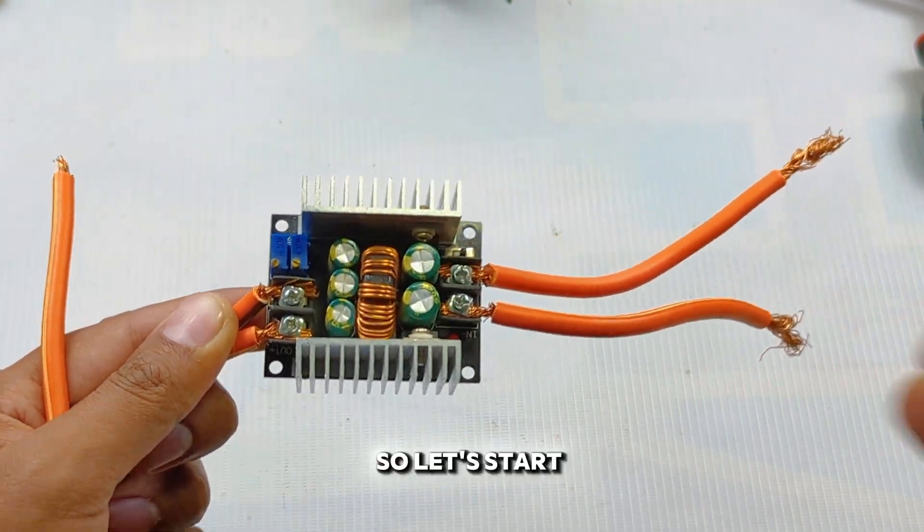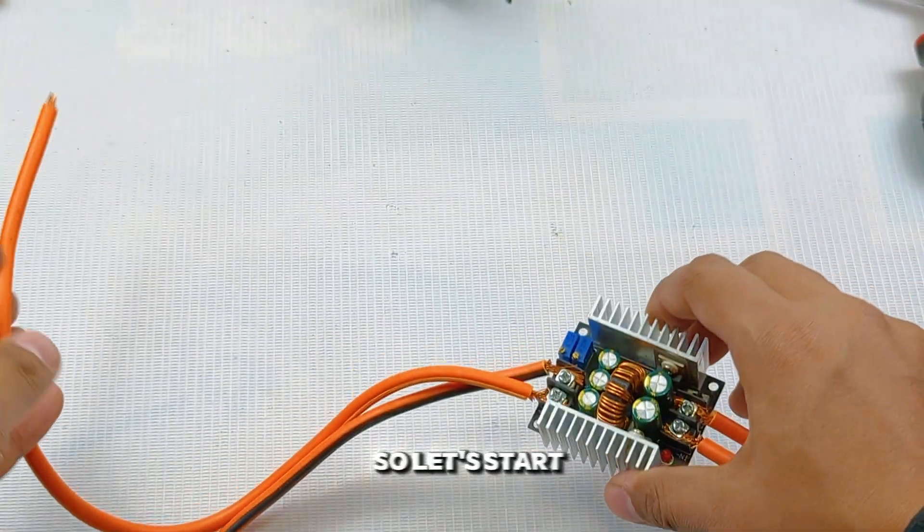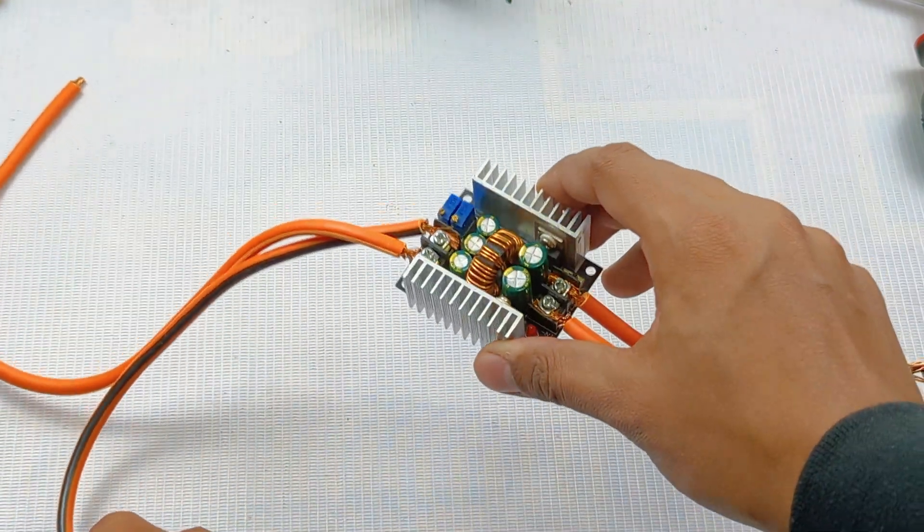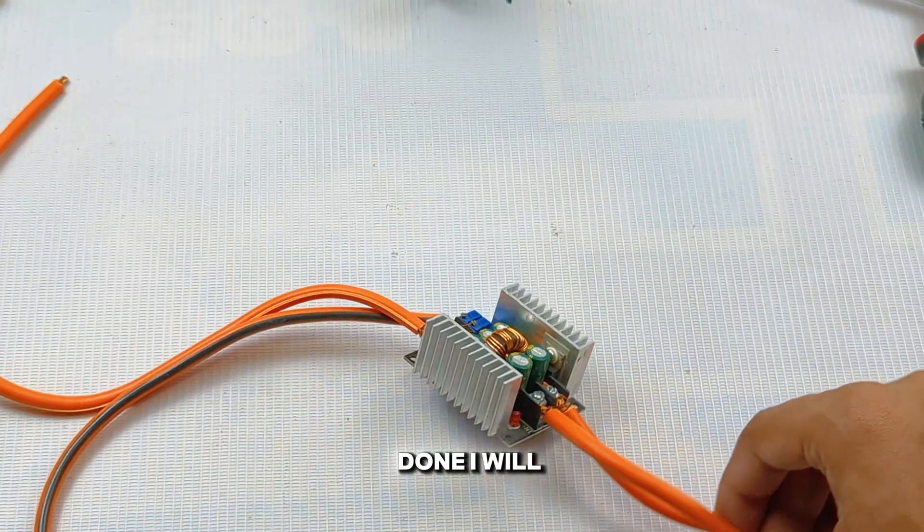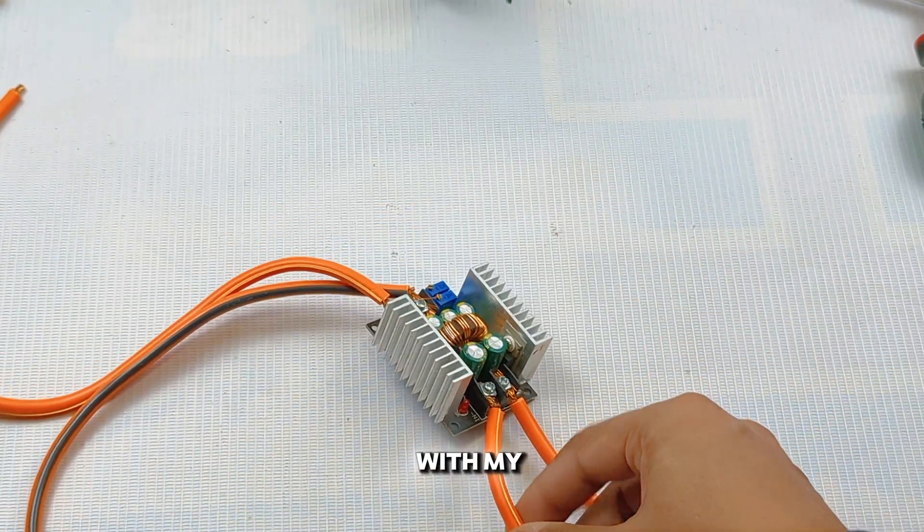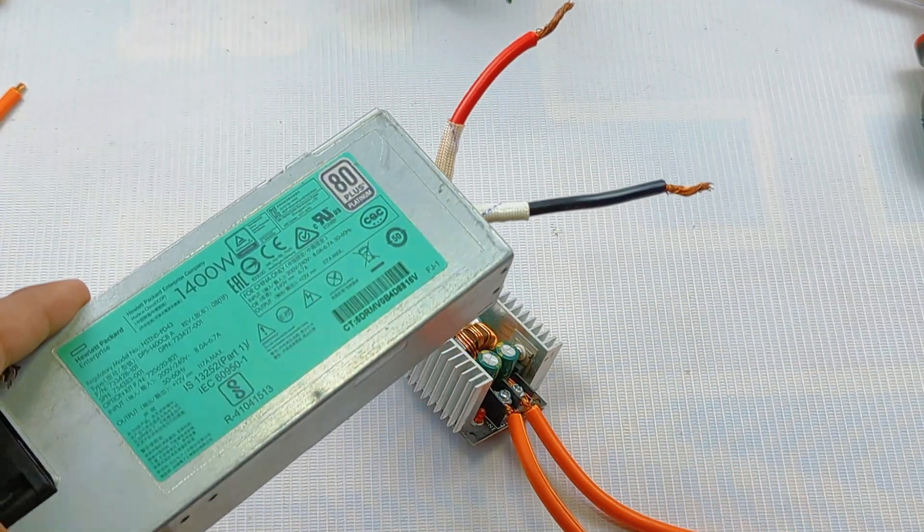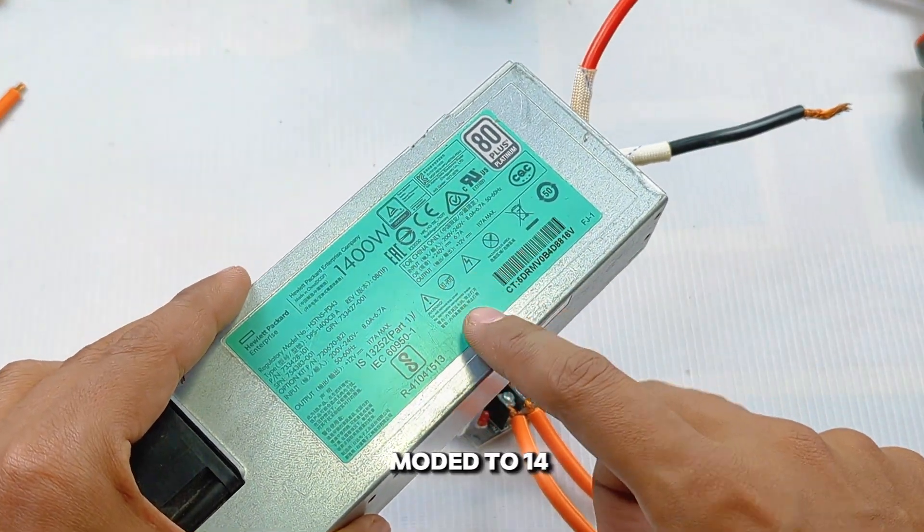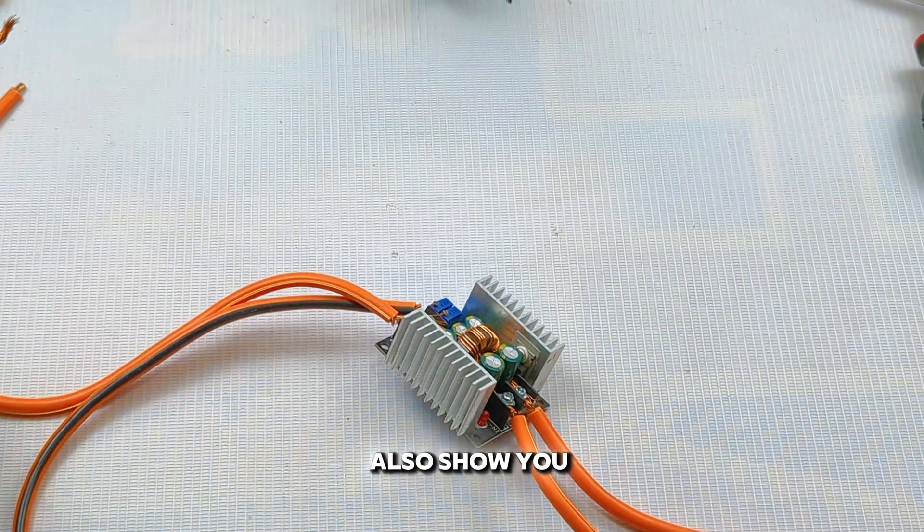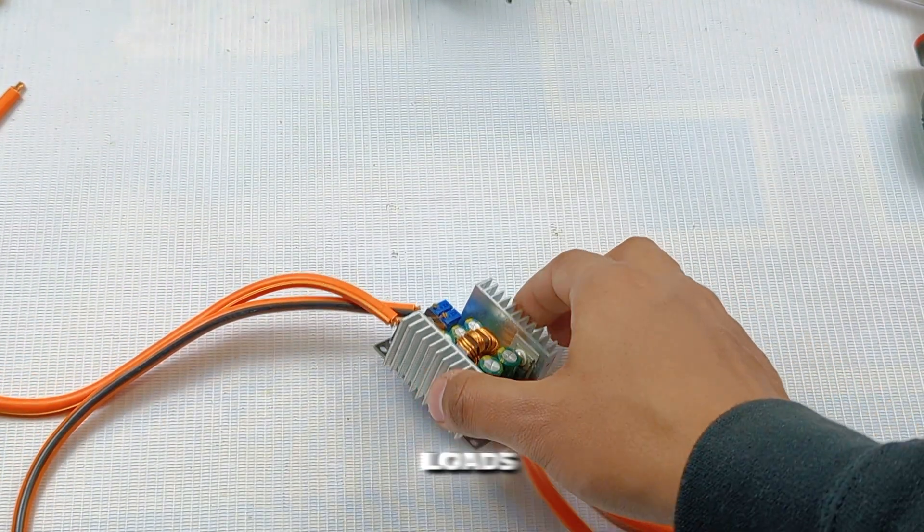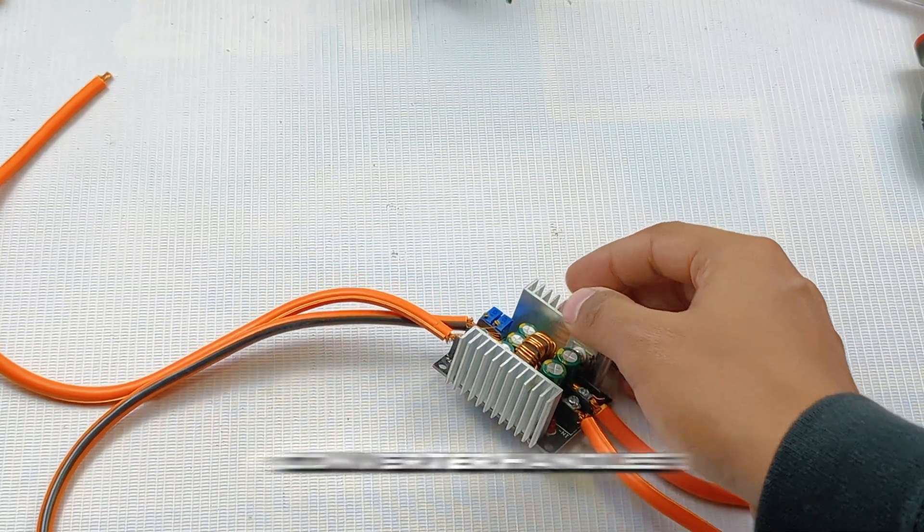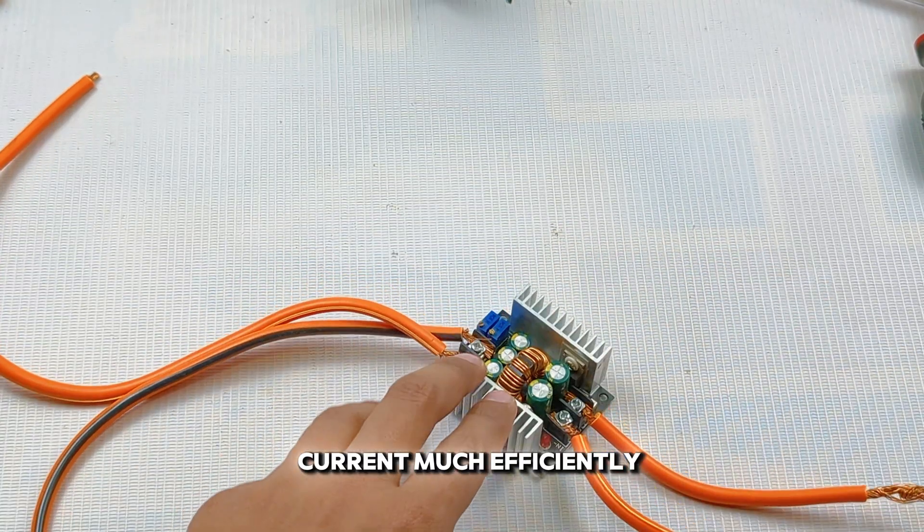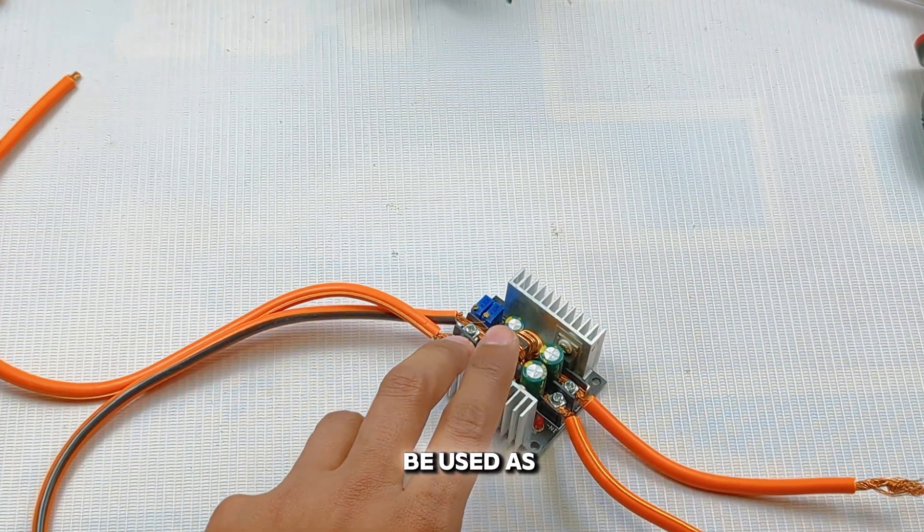Let's start. Wiring is already done. I will power it up with my 1400 watt power supply which I modded to 14 volts. I will show you by driving some loads how this buck converter handles the voltage and current efficiently.